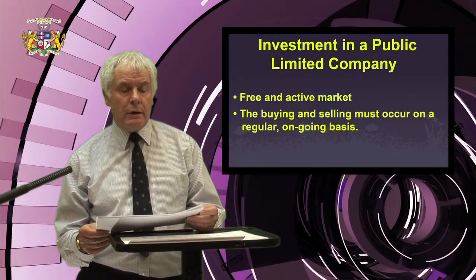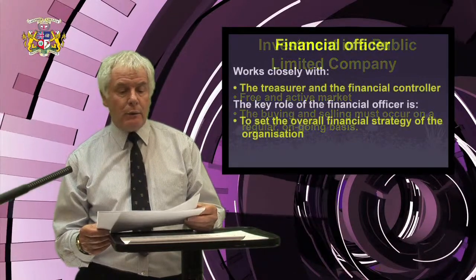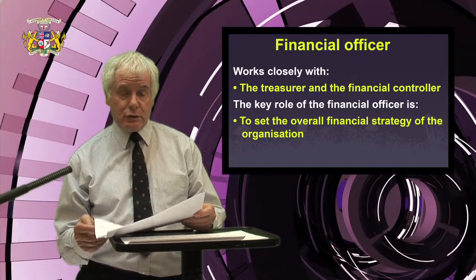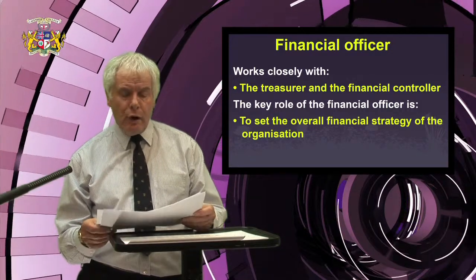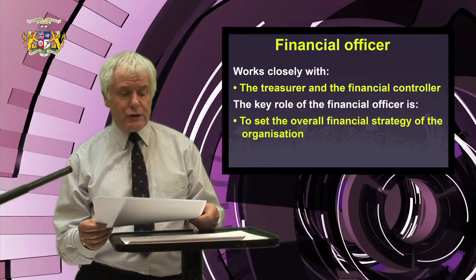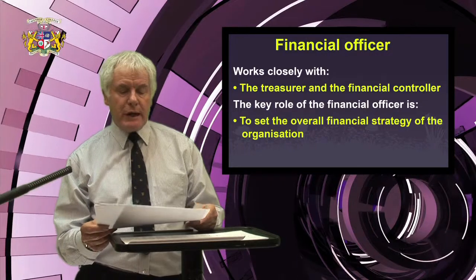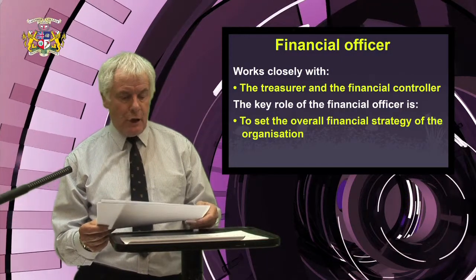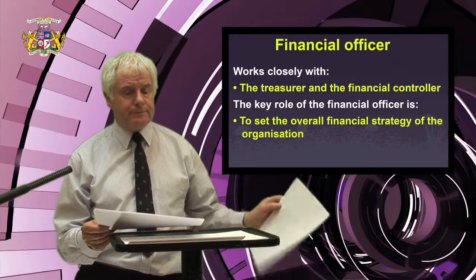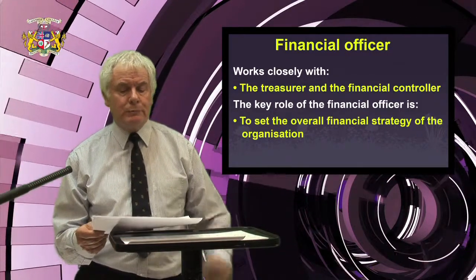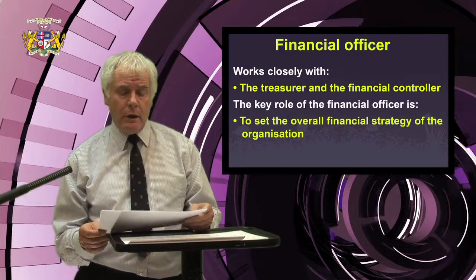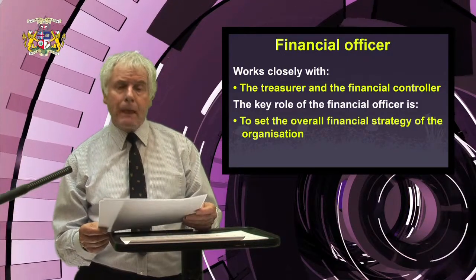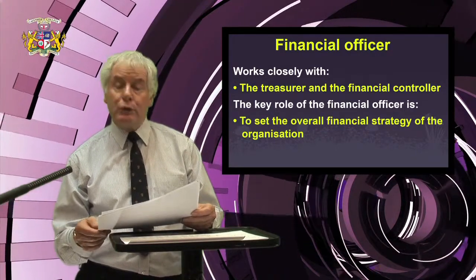If an organisation is investing some of the profits it is earning, it will usually have a chief financial officer who works closely with the treasurer and the financial controller. The key role of the chief financial officer is to set the overall financial strategy for the organisation. This team must have a great understanding of financial markets, financial institutions, payment mechanisms, borrowing and lending, and the pooling of risk. Good managers are always looking to maximise the value of the firm in order to satisfy all of their stakeholders — anyone with a financial interest in the firm.